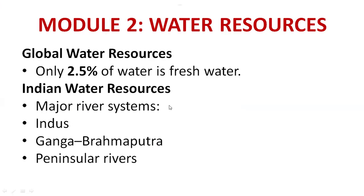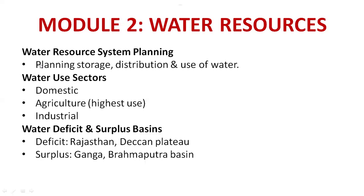Module 2 focuses on water resources. Only 2.5% of fresh water is available globally. India's major water resources include river valley systems such as the Ganga, Brahmaputra, and Peninsular rivers. Water resource system planning involves planning storage, distribution, and usage of water. Water use sectors include domestic, agricultural, and industrial. Water deficit areas include Rajasthan; surplus areas include the Ganga-Brahmaputra basin region.